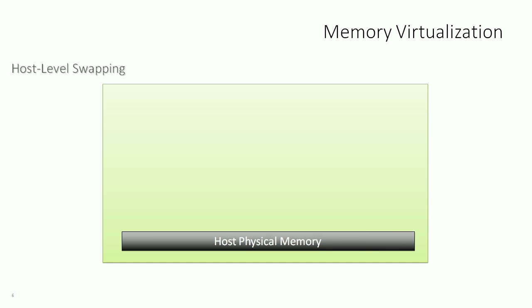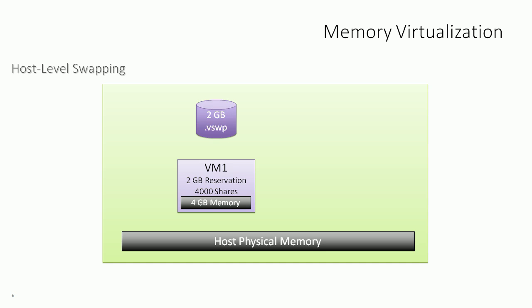If memory compression is not enough, we go to even more severe measures: host level swapping, the last resort of the ESXi host. Here's how it works: VM1 has a 2 GB memory reservation and 4 GB of allocated memory. When this VM boots, a vSwap file is dynamically created equal to allocated memory minus the reservation — any reserved memory is guaranteed and doesn't need to be accounted for in the vSwap file. So 4 GB allocated minus 2 GB reservation equals a 2 GB vSwap file.